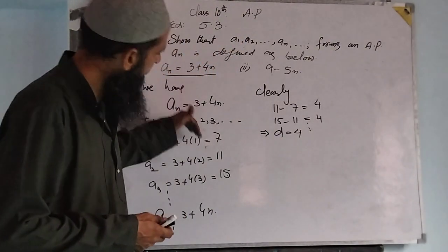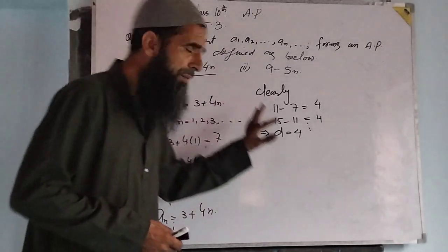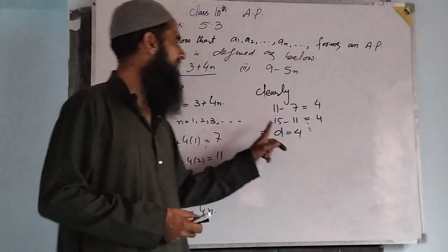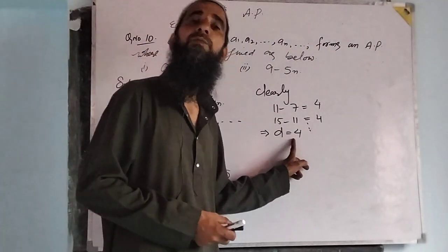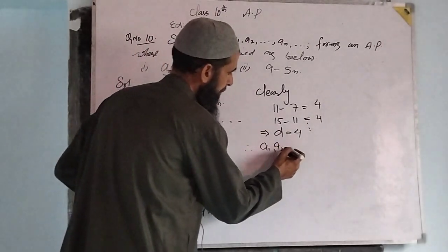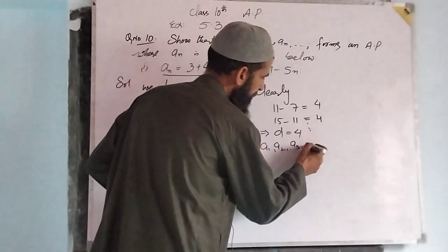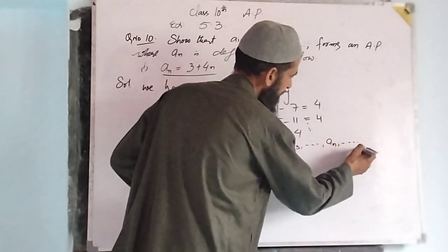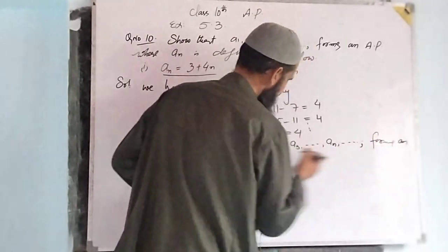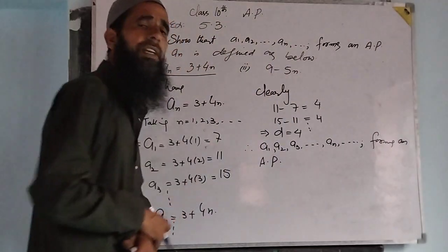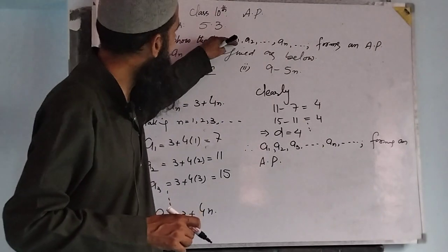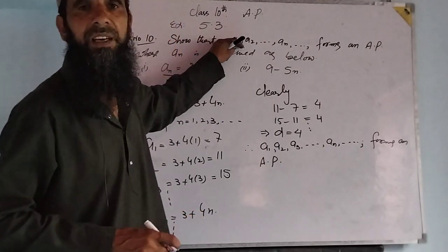And the first term a is equal to a1, which is equal to 7. Clearly, a1, a2, so on up to an forms an Arithmetic Progression with first term 7 and common difference 4. Therefore a1, a2, a3, so on up to an forms an Arithmetic Progression. This is our first part.